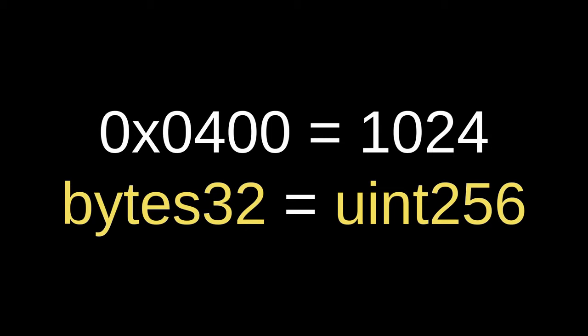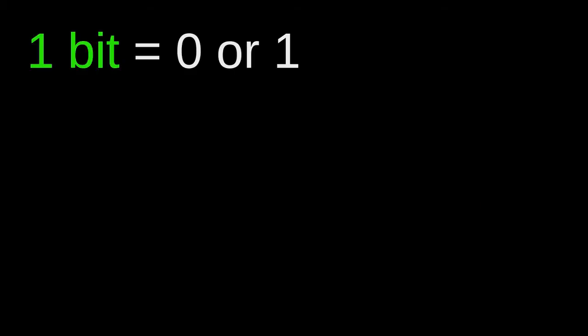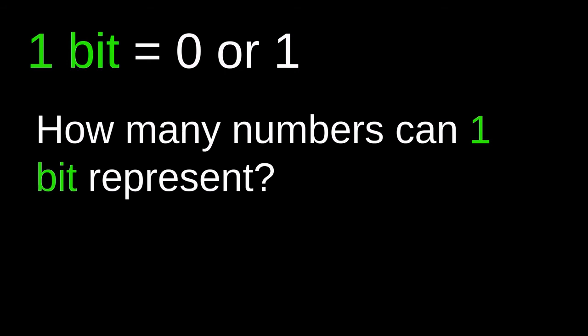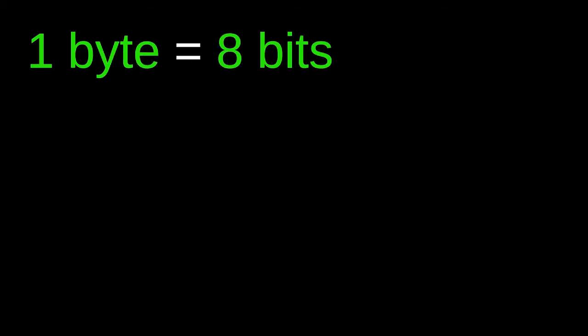First let's understand bits, bytes, and hex. One bit is equal to zero or one, so I'm going to ask you a simple question: how many numbers can one bit represent? Well, since a bit is either equal to zero or one, this means that a single bit can represent two numbers.